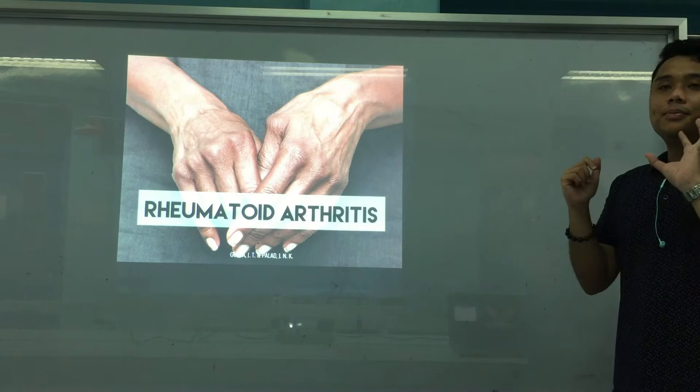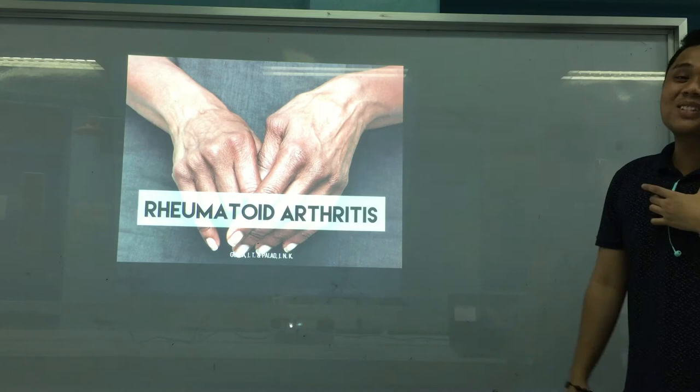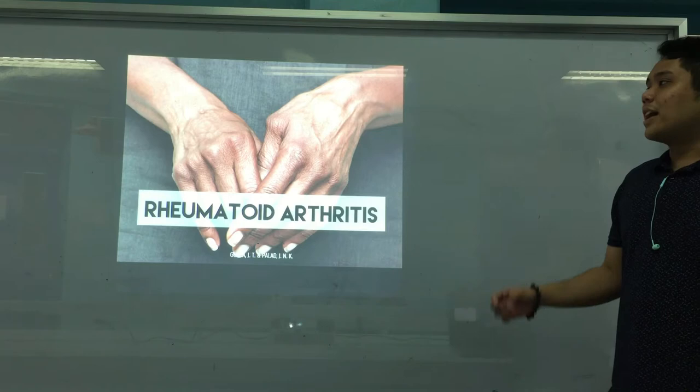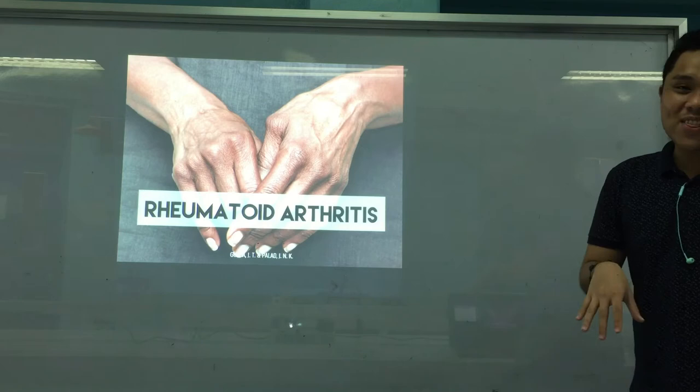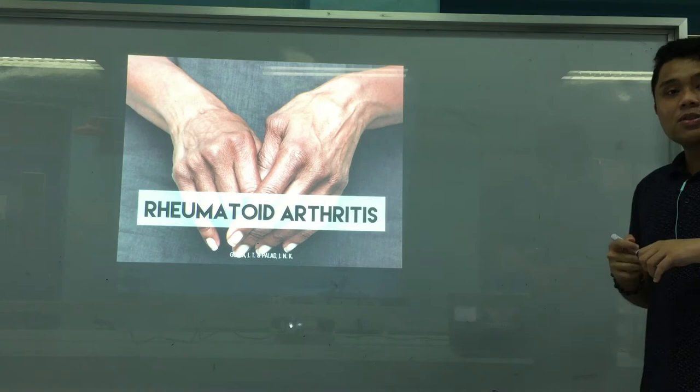We'll talk about the serology of rheumatoid arthritis — again, an autoimmune disease. We're just going to discuss this one autoimmune disease in our lab, and the rest of your autoimmune diseases are in the lecture. So you may be wondering: what is rheumatoid arthritis? Actually, there are a lot of different types of arthritis, and rheumatoid arthritis is one of them.